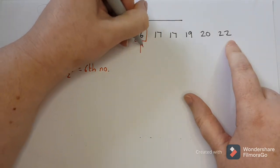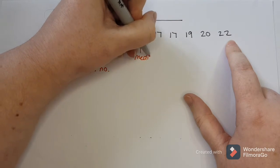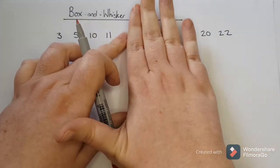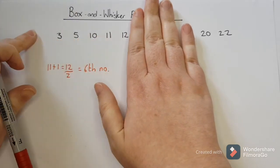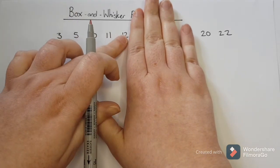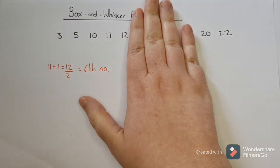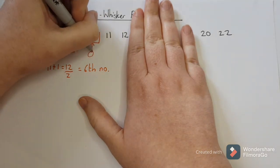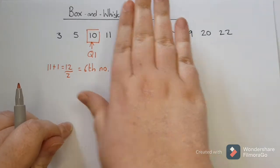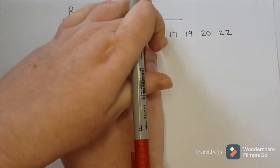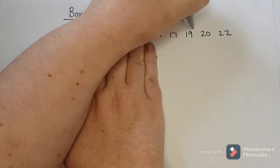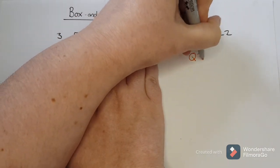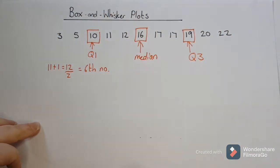So this is then my median. Then I'm going to exclude the median and look at only those numbers. There are five numbers there, so I want the middle number — that is my lower quartile. And on the other side I have five numbers as well, so the middle one is going to be my upper quartile.